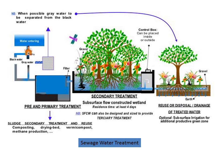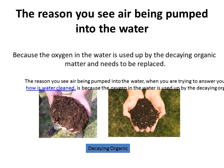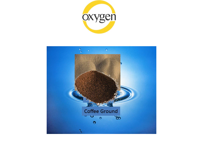Next, you will notice the water enter into a series of parallel, long concrete tanks, which are divided into a couple of sections. The first section is where you will see air being pumped through the water. The oxygen in the water is used up by the decaying organic matter and needs to be replaced.